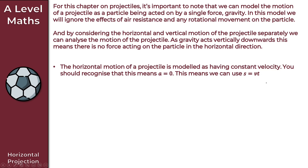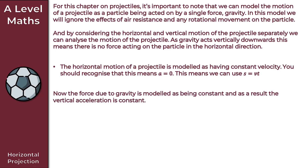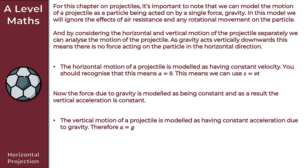The force due to gravity is modeled as being constant, and as a result the vertical acceleration is constant. To summarize, the vertical motion of a projectile is modeled as having constant acceleration due to gravity. The acceleration is equal to g, and unless the question states otherwise, we take g to be equal to 9.8 meters per second squared.